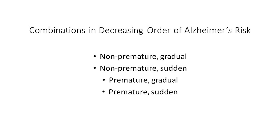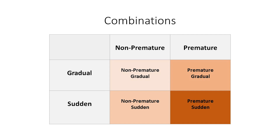All menopausal experiences combine both broad categories. All women will have either premature or non-premature menopause, and all women will have either sudden or gradual menopause. Listed in decreasing order of Alzheimer's risk: first is non-premature gradual menopause, then non-premature sudden menopause, followed by premature gradual menopause, and finally premature sudden menopause. A color-coded chart demonstrates this, with lighter colors indicating lower risk.